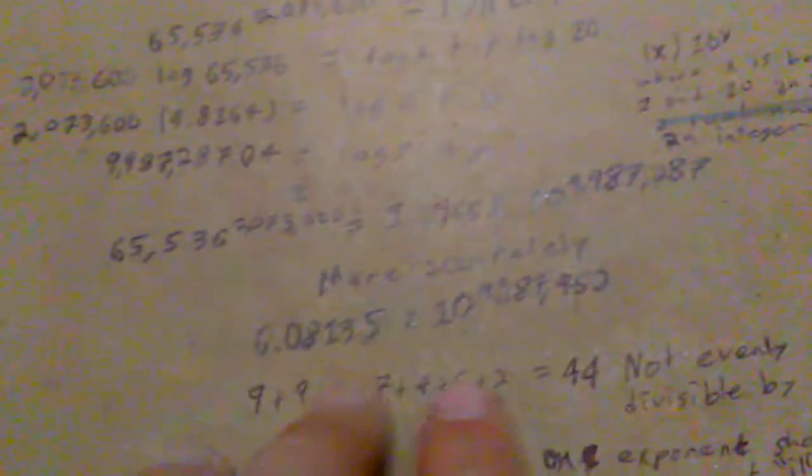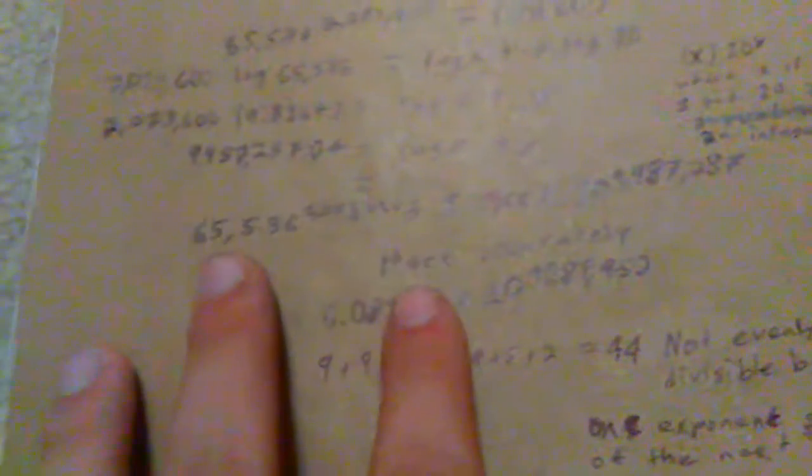Okay, so now, in case you don't know, each -illion, if you will, whether it be million, billion, trillion, all those, they happen every third digit.